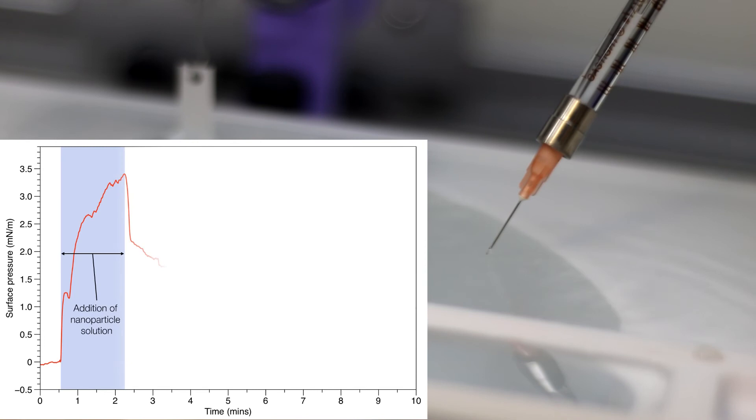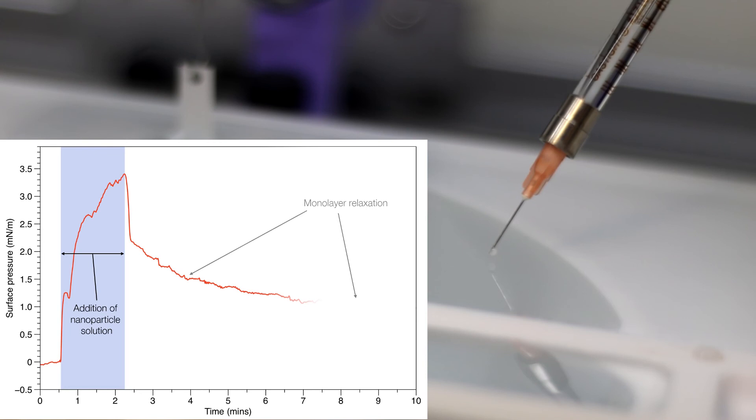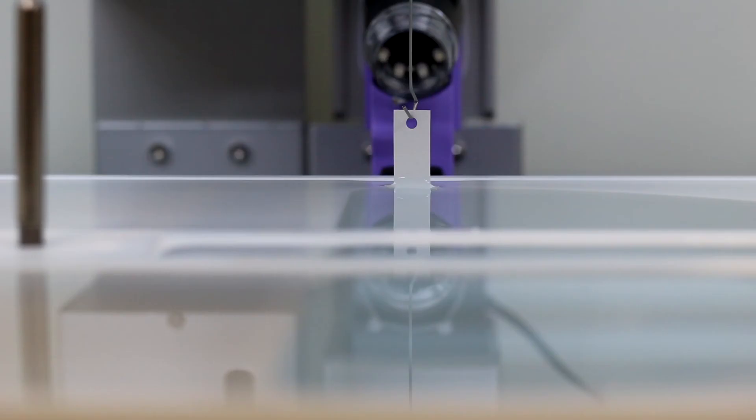We can now slowly add our solution to the interface. As you add material to the surface, keep an eye on the surface pressure. As a starting point, it is generally sufficient to add a volume of solution to the interface such that the surface pressure stabilizes around one millinewton per meter. Keep a note on the total volume of solution you've used in order to induce this surface pressure increase.